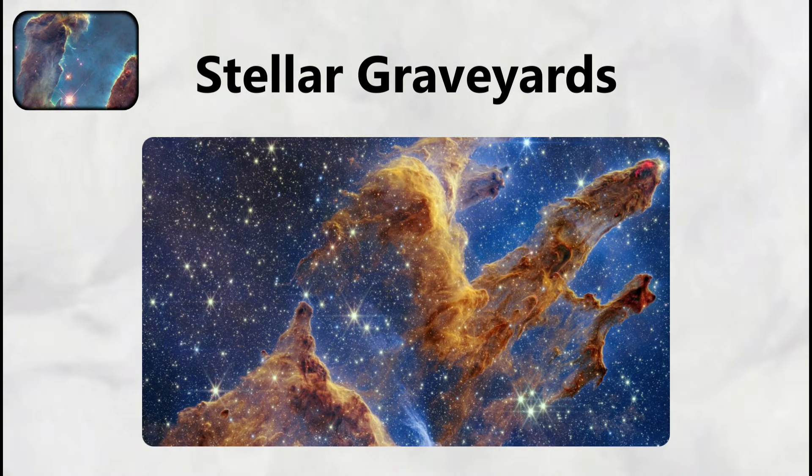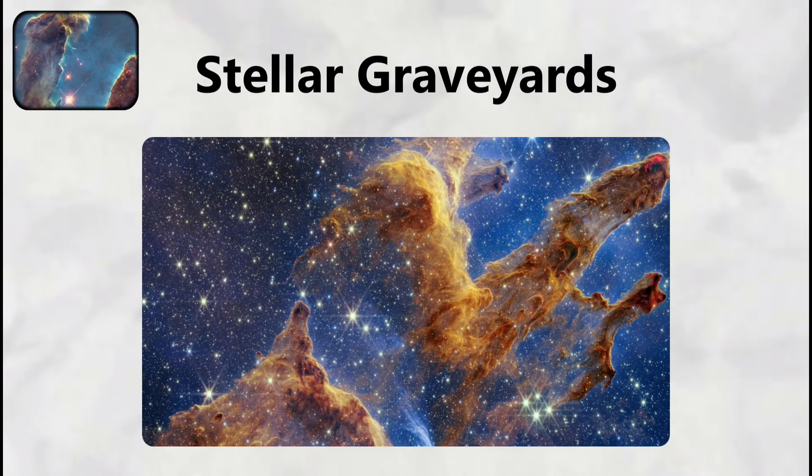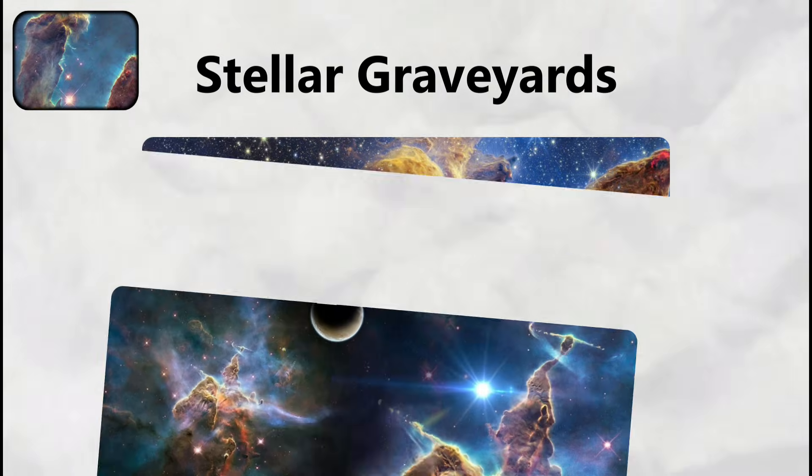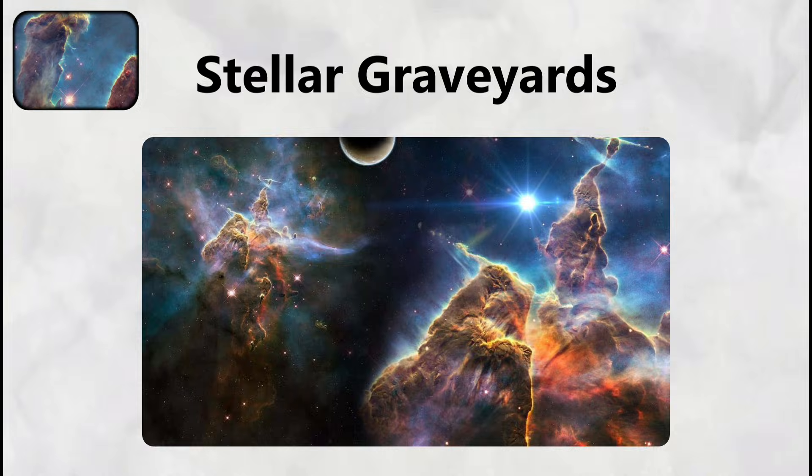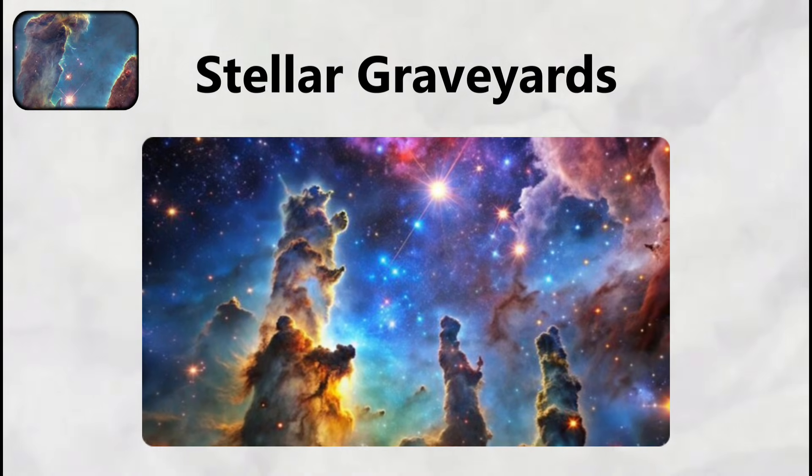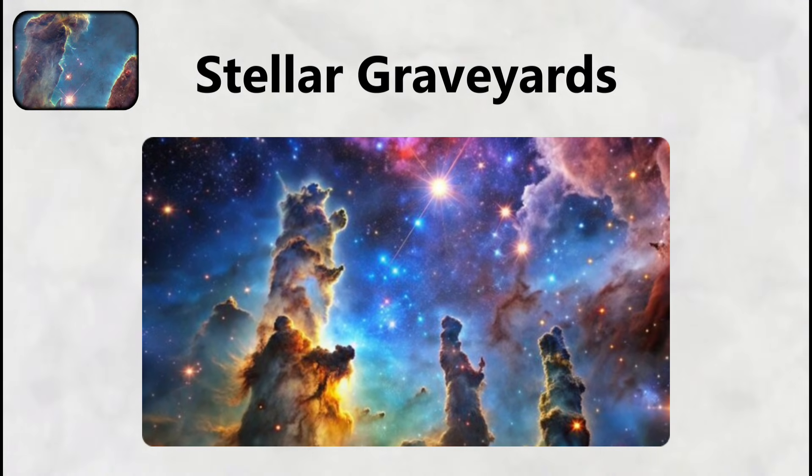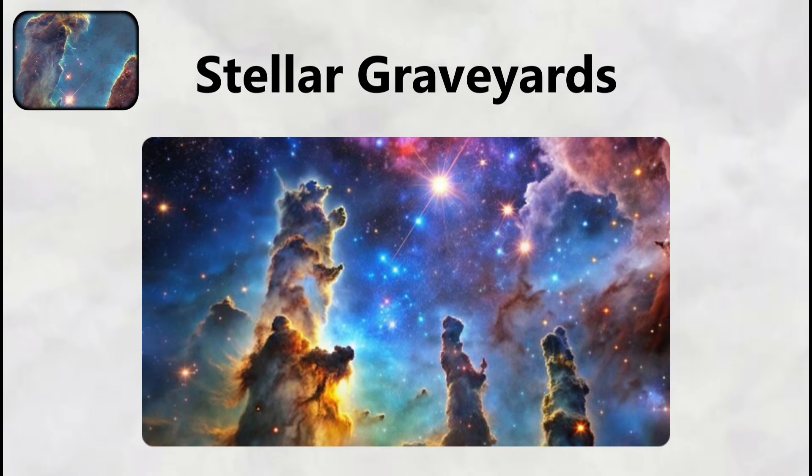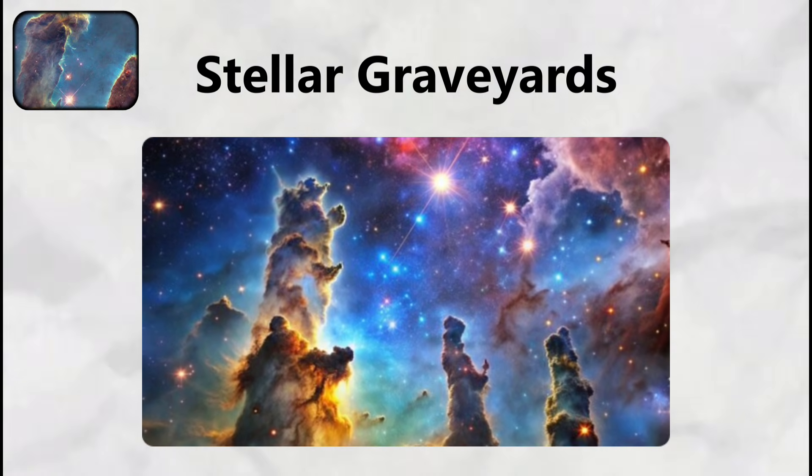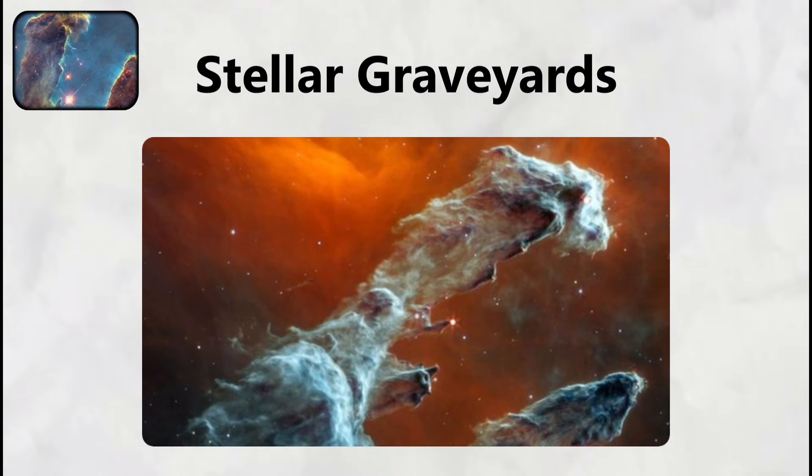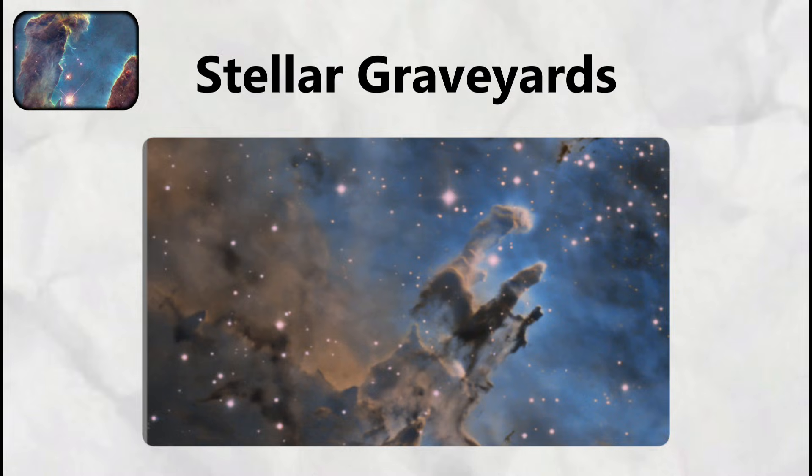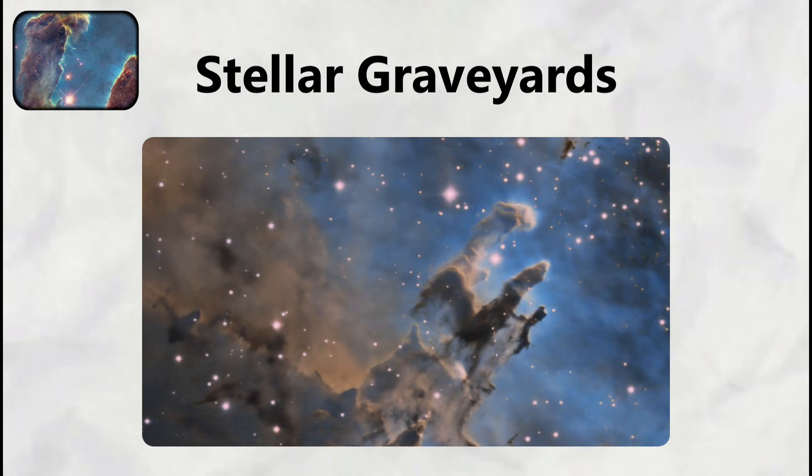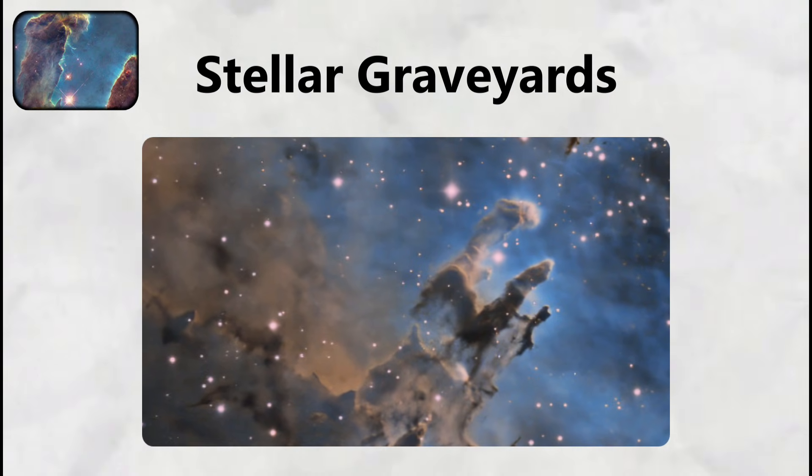The process of photoevaporation creates ghostly finger-like projections called elephant trunks, where denser knots of material resist the stellar radiation longer than their surroundings. Scientists estimate that the pillars of creation have already been destroyed by a supernova explosion that occurred 6,000 years ago, but the light from this destruction has not yet reached Earth due to the finite speed of light. When this light finally arrives, we will witness the violent death of one of astronomy's most iconic structures.